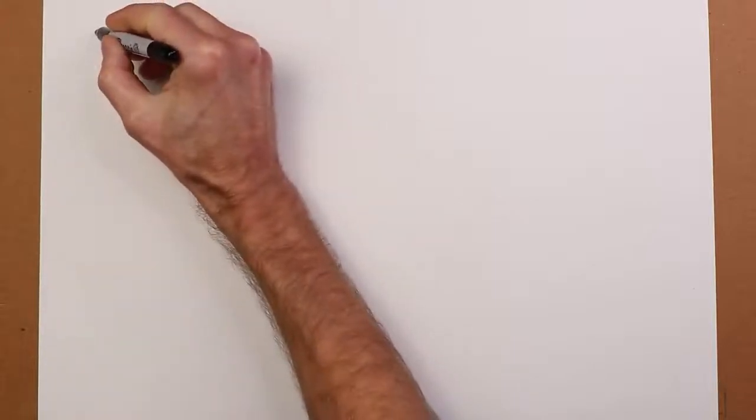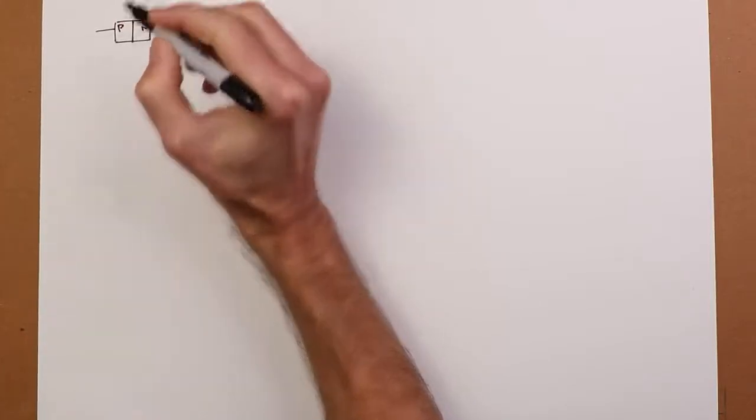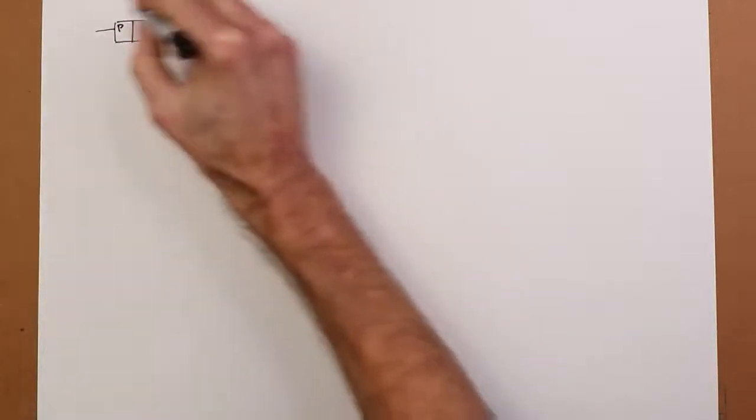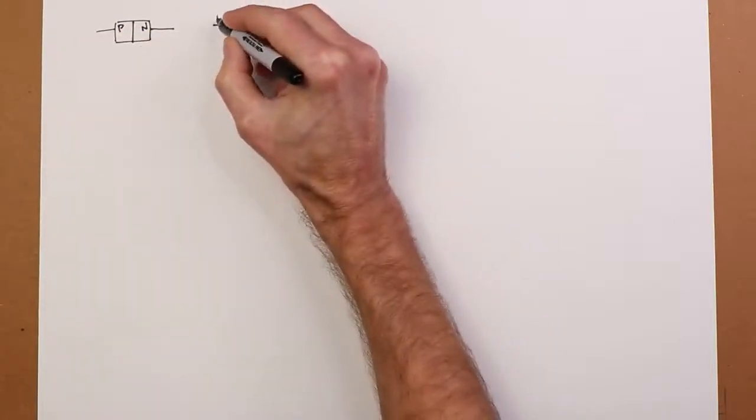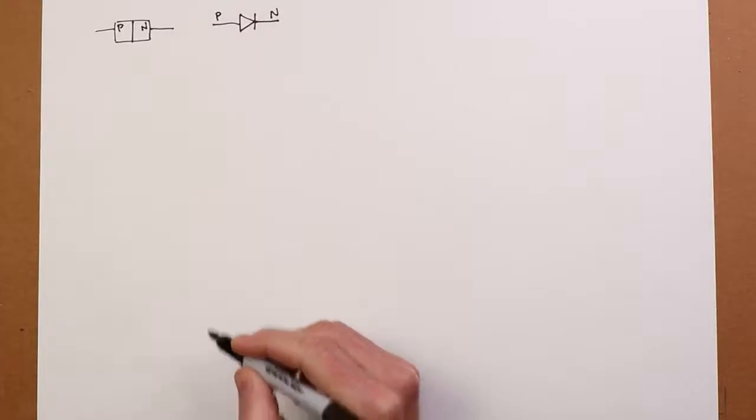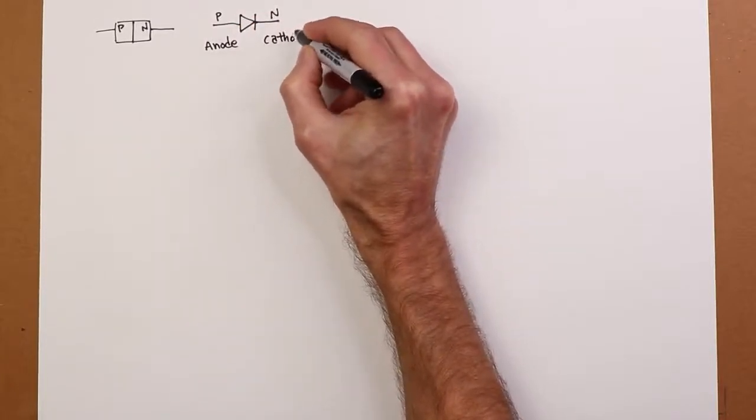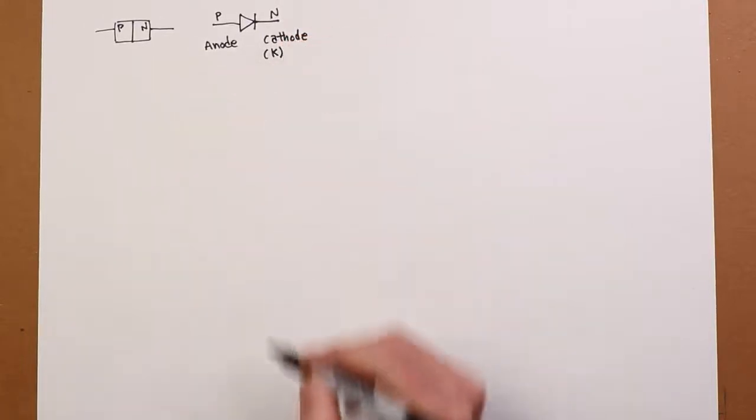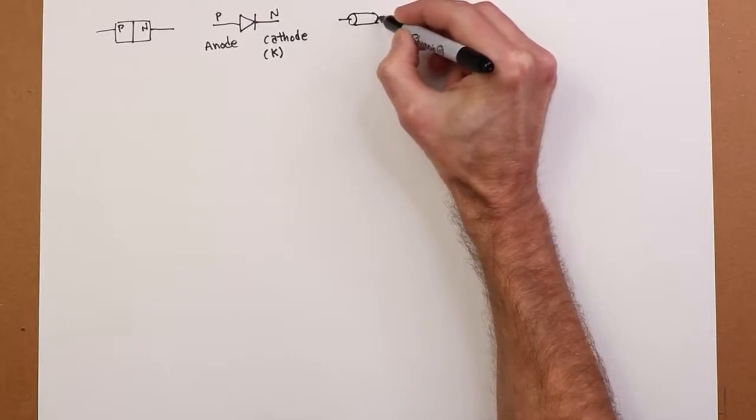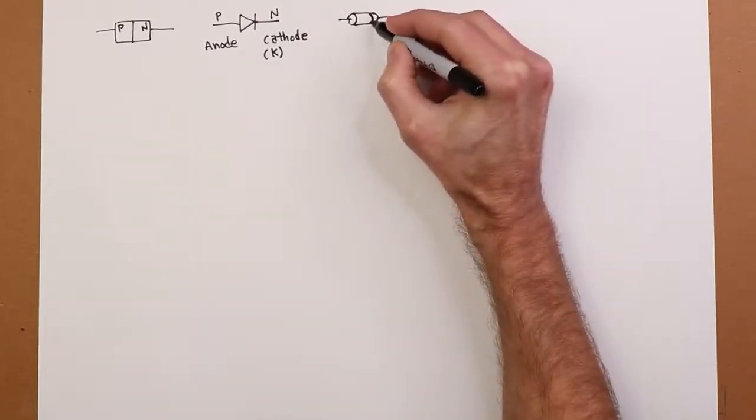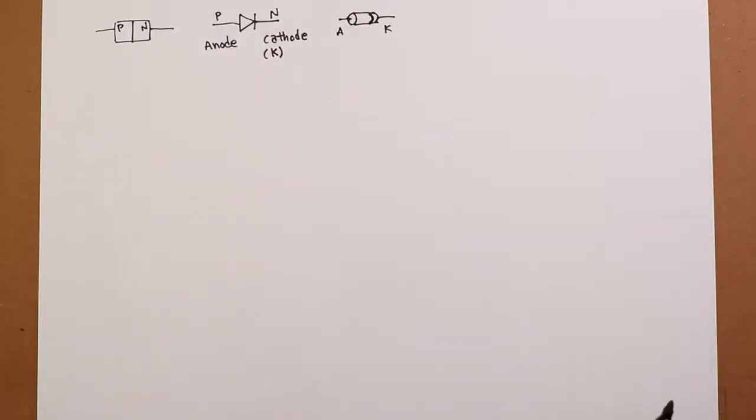All right, so when we left off, we were talking about a PN junction like so. Our schematic symbol for a diode, because this is basically what a diode is - it's just a PN junction. Schematic symbol looks like this in the same orientation. P material here, N material here. This side is referred to as the anode. This side is referred to as the cathode, often abbreviated with a K. For a typical barrel style diode, you will find a band on the cathode.